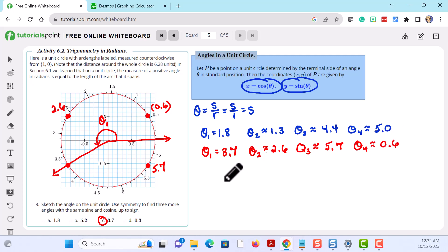I'll leave the last two as exercises for you. See if you can sketch 5.2 and 0.3 and then come up with three more angles with the same sine and cosine up to sine.